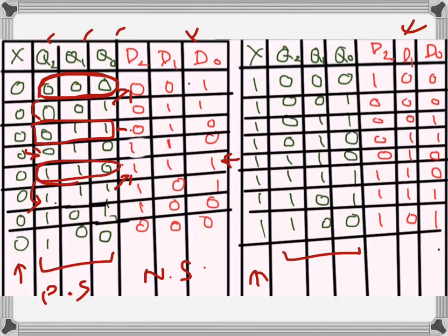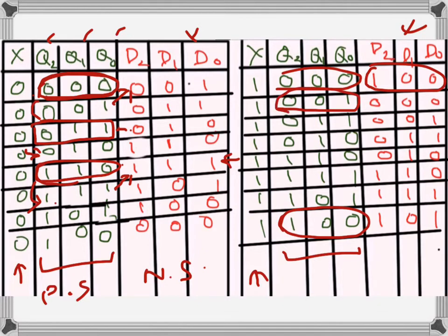While counting down, if the present state is 0 0 0 and it is counting down, the next state from the gray code sequence should be 1 1 0, so at the input we want 1 1 0. Similarly, when the present state is 0 0 1 and counting down, the next state will be 0 0 0, so the input is 0 0 0. While counting down, the next state is essentially the previous gray code value. That's how the truth table is written.